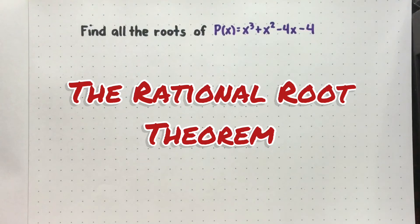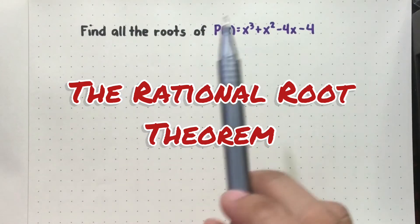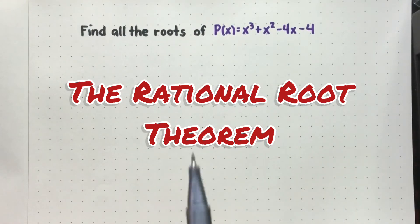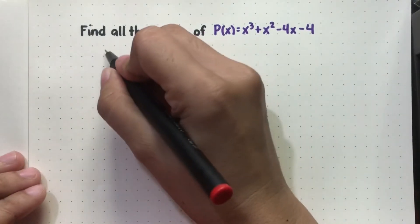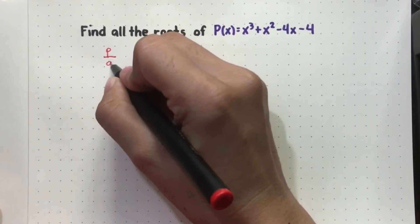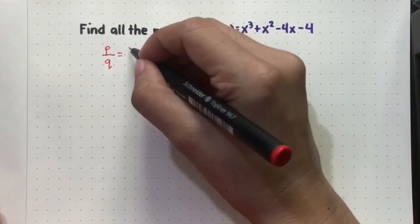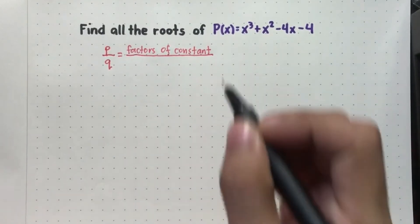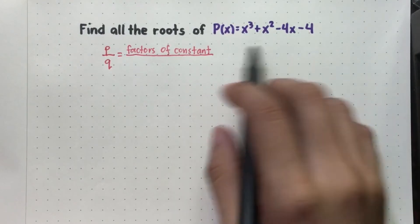The Rational Root Theorem is used to find the rational solutions of a polynomial equation. For example, we have to find all the roots of x cubed plus x squared minus 4x minus 4. From the word itself — rational — it means that the roots will come from a ratio, which is p over q, wherein p will come from the factors of the constant, while the denominator q will come from the factors of the lead coefficient or the term with the highest degree.